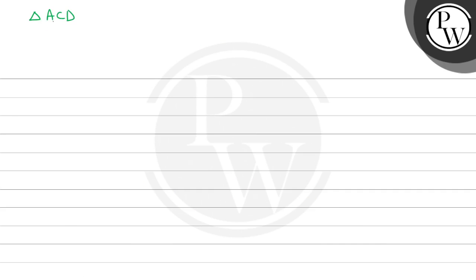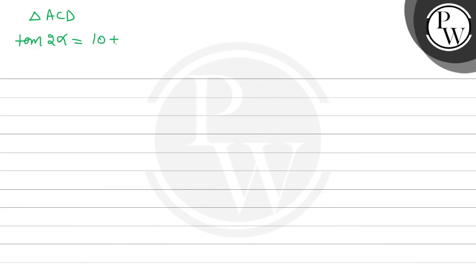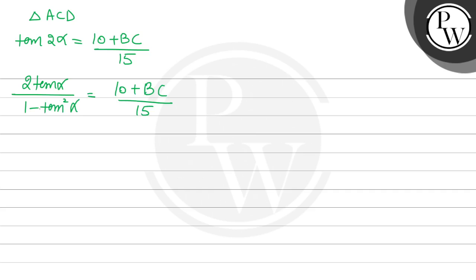In triangle ACD, we apply tan 2α. The angle at D subtended by AB plus BC is 2α, so tan 2α equals AB plus BC upon 15, which is 10 + BC upon 15. Using the double angle formula: 2 tan α upon 1 minus tan² α equals 10 + BC upon 15. Substituting tan α = 2/3: 2 × (2/3) upon 1 minus 4/9.